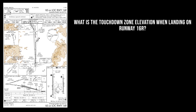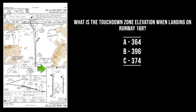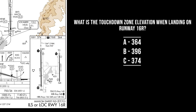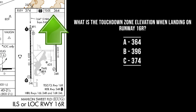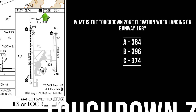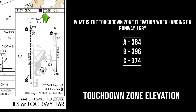Another question that could be seen on the FAA instrument written exam is this: What is the touchdown zone elevation when landing on runway 16R? Zooming in on the section of the chart known as the airport sketch, the answer can easily be found. In the top right corner we see TDZE, or touchdown zone elevation, and the answer is 364 feet.